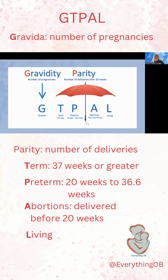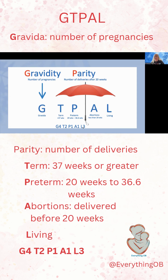When you see GTPAL written out, you'll most often see it written a couple of different ways. You'll either see it written as G4, T2, P1, A1, L3. This means the patient has had four pregnancies, two term deliveries, one preterm delivery, one abortion, and has three living children currently.